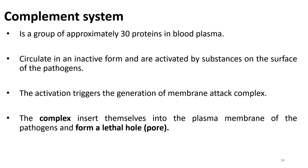The complement system is a group of approximately 30 proteins found in the blood plasma, normally in an inactive form, that are activated by substances on the surface of pathogens. This activation triggers the generation of a membrane attack complex, which is inserted into the plasma membrane of the pathogen, forming a small hole or pore.